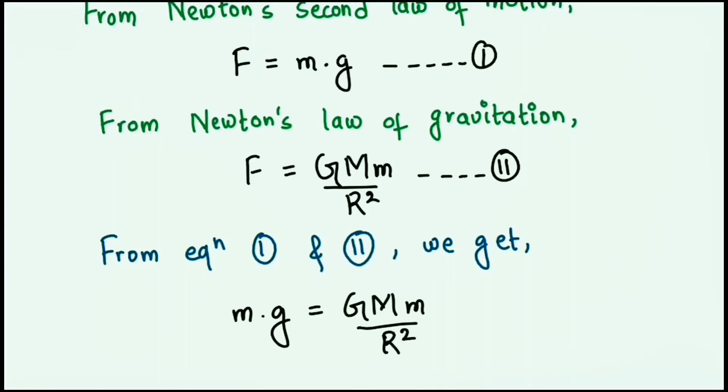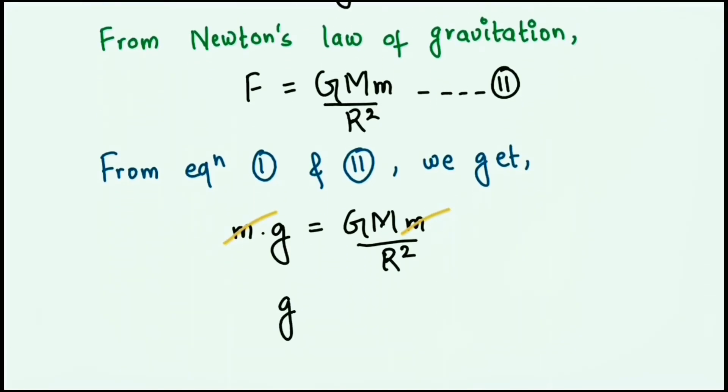Now if we were to eliminate these two tiny masses, then we get our formula. That is g = GM/R².